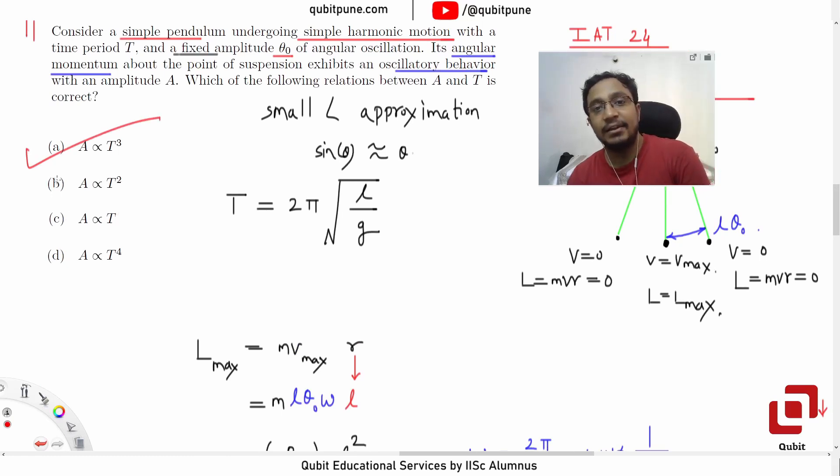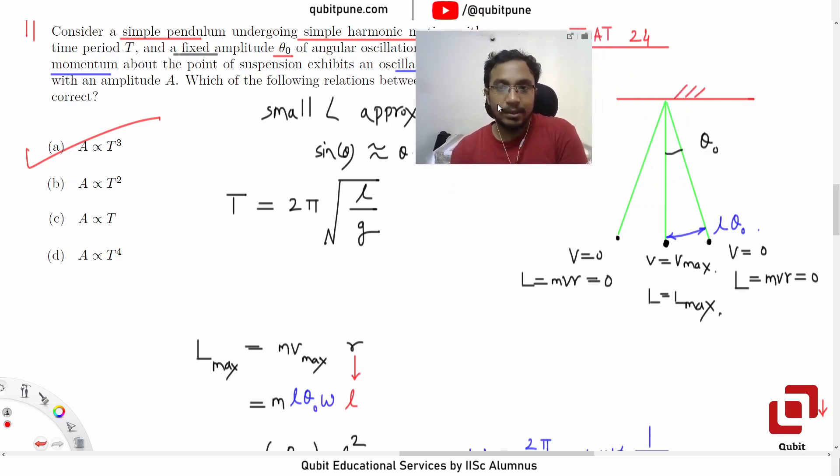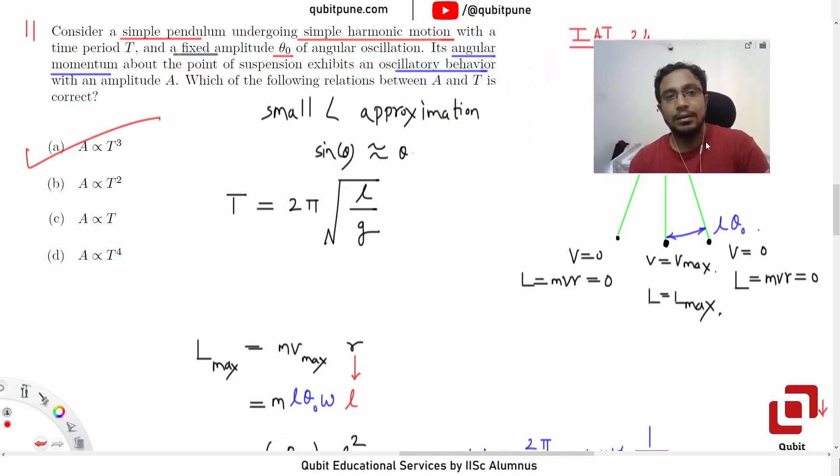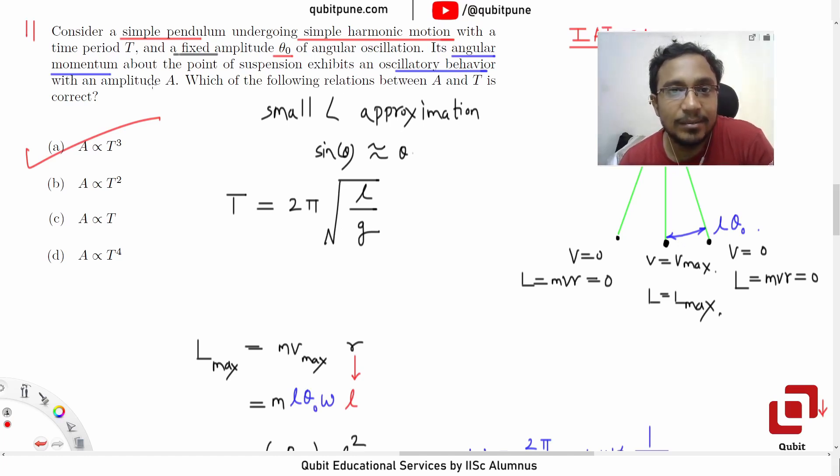This is the relationship between angular momentum and amplitude. Followed? Simple problem. Sir, but it is given that A is amplitude and not angular momentum. No. Its angular momentum exhibits an oscillatory behavior with an amplitude, which means it's the maximum angular momentum which is equal to A. Read the problem. Its angular momentum exhibits oscillatory behavior with an amplitude. So A itself is the amplitude and maximum value of the angular momentum. So L max. Yes sir.